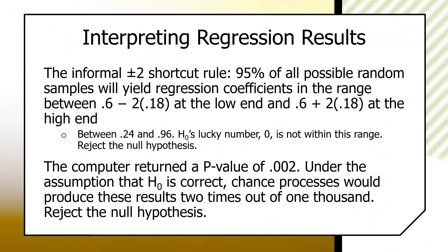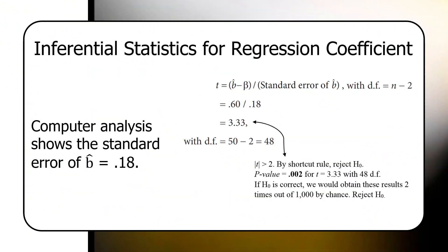More formally, we calculate the t-ratio, .60 divided by .18 is 3.33. And the way regression works, this would be with 48 degrees of freedom. The computer calculated a p-value of .002.